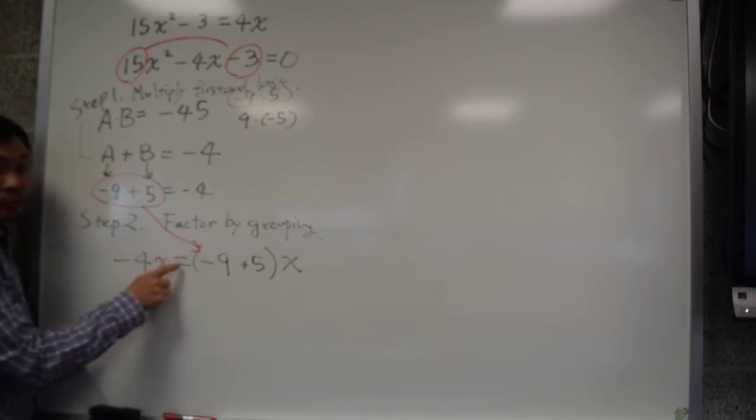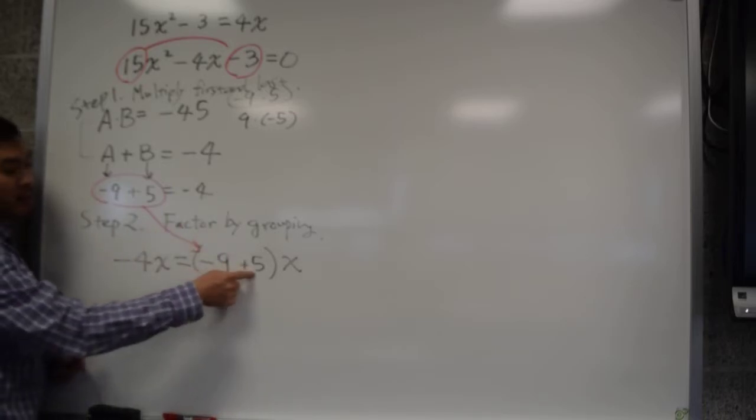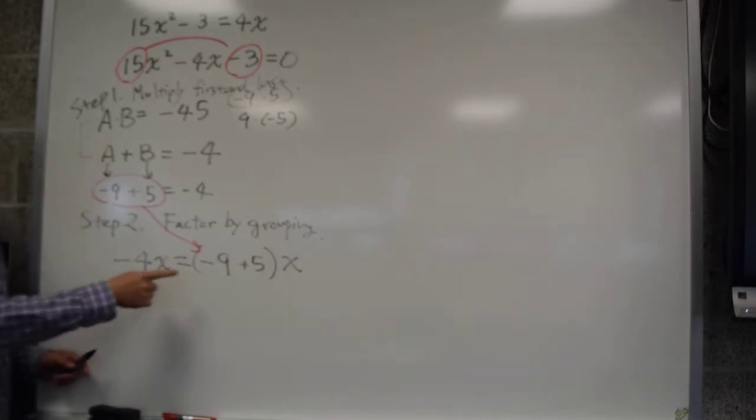This thing goes in here. Now whenever you see an equal sign, make sure that it is indeed equal. If you have negative 9 plus 5, that's negative 4. Negative 4 times x is indeed the same as negative 4x. So you agree that this is true.